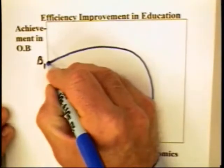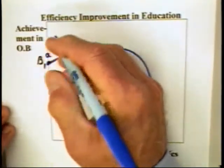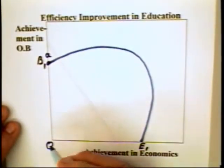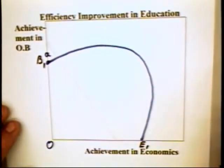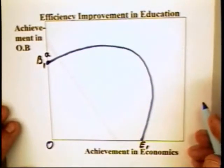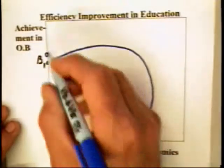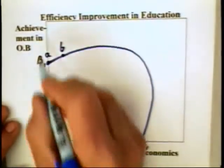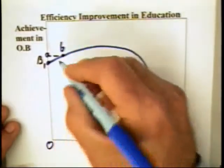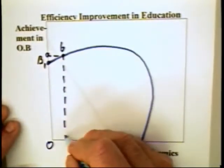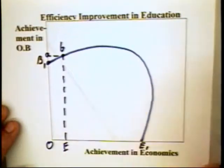That is, the individual could be at combination A, learning no economics. If the individual applies some time to the study of economics, it is possible to move to a combination like B — where the individual learns more organizational behavior and more economics.